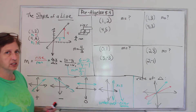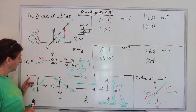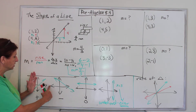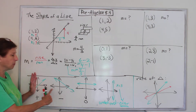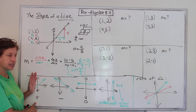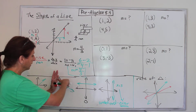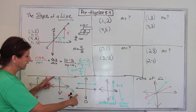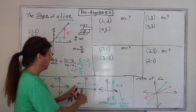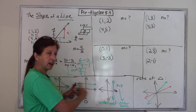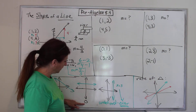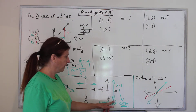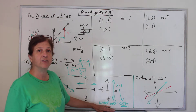Another thing about slope: if the line is going up, it's said to be a positive slope. Think of it like the stock market — if the stock market's going up, everybody thinks that's positive. If it's going down, it's negative. So uphill is positive, downhill is negative. If it's totally flat, like Florida, it has zero slope. And if it goes straight up and down, it is said to have an undefined slope.